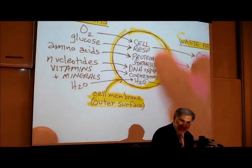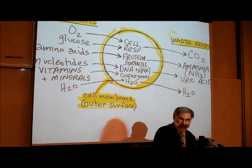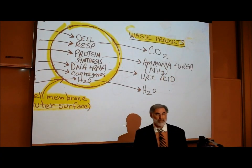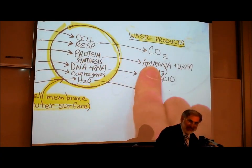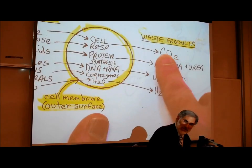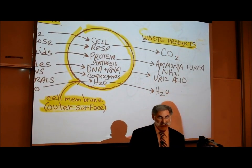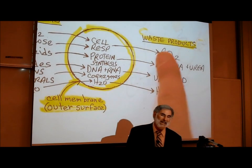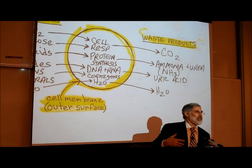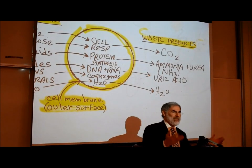Nutrients get into cells by moving across the cell membrane — the outer surface. Living cells also produce waste products that must get out of the cell by moving across the outer cell membrane. Most waste products are excreted in urine — ammonia, urea, uric acid, excess water — while carbon dioxide is exhaled from our mouth. This explains why we need certain nutrients in our food, why we need oxygen, where carbon dioxide comes from, and what's in our urine.